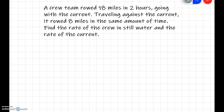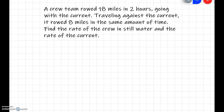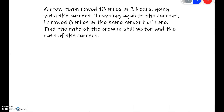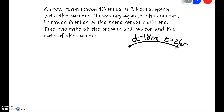Now let's work a current problem with a boat where we have a rower going upstream and downstream. When going upstream, we are rowing against the current; going downstream means rowing with the current. The problem says a crew team rowed 18 miles in 2 hours going with the current. The question asks to find the rate of the crew and the rate of the current. So R is the rate of the crew as they're rowing, and C is the rate of the current.